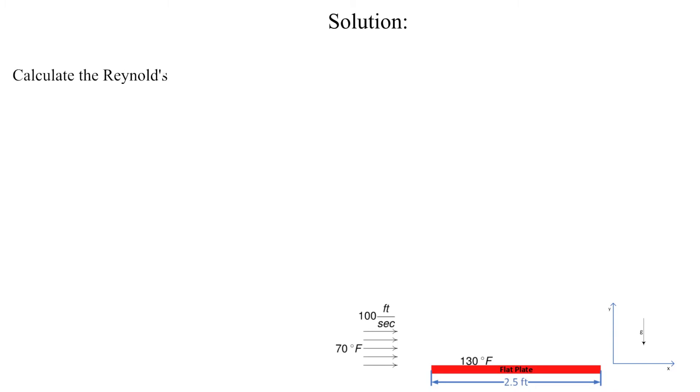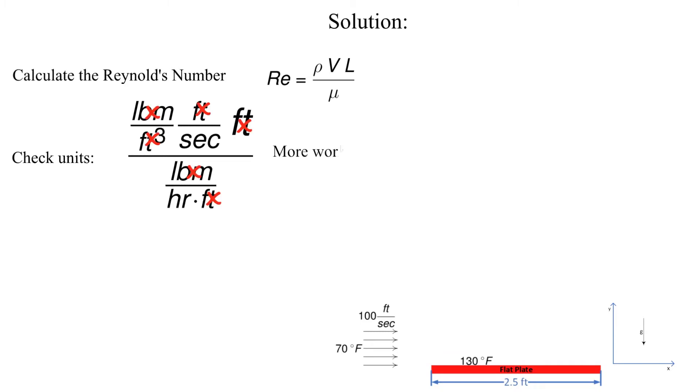Let's calculate the Reynolds number. We have all the necessary air properties and we will use the overall length of the plate. Let's check the units. Clearly we need a conversion factor to convert from hours to seconds.